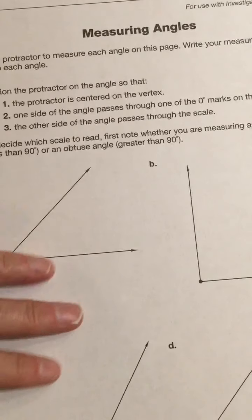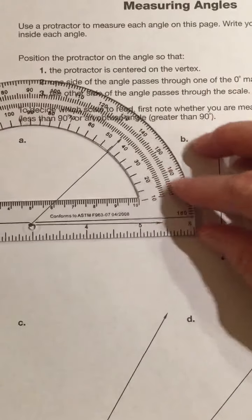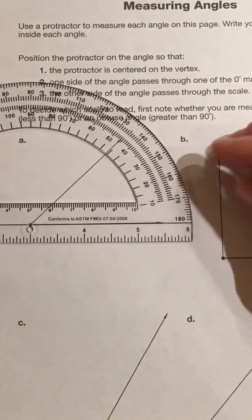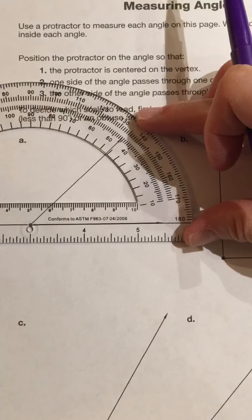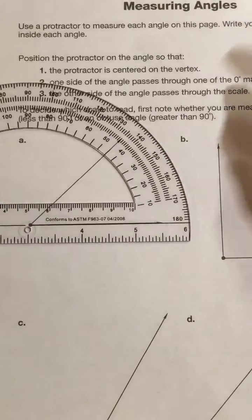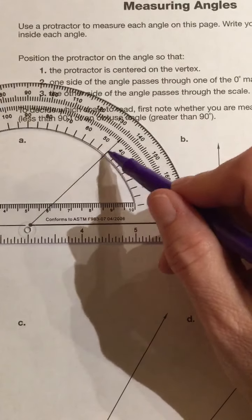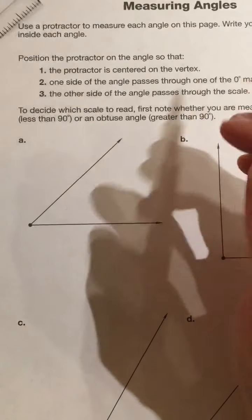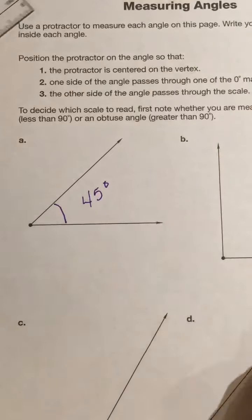Now we are going to move on to measuring angles and practice. Let's put our protractor up here and line up the line — that line falls right below the zero. I look and I have 40 degrees here, 50 over here, so right in between will be a 45 degree angle. This is 45 degrees — I'm measuring the interior of the angle.